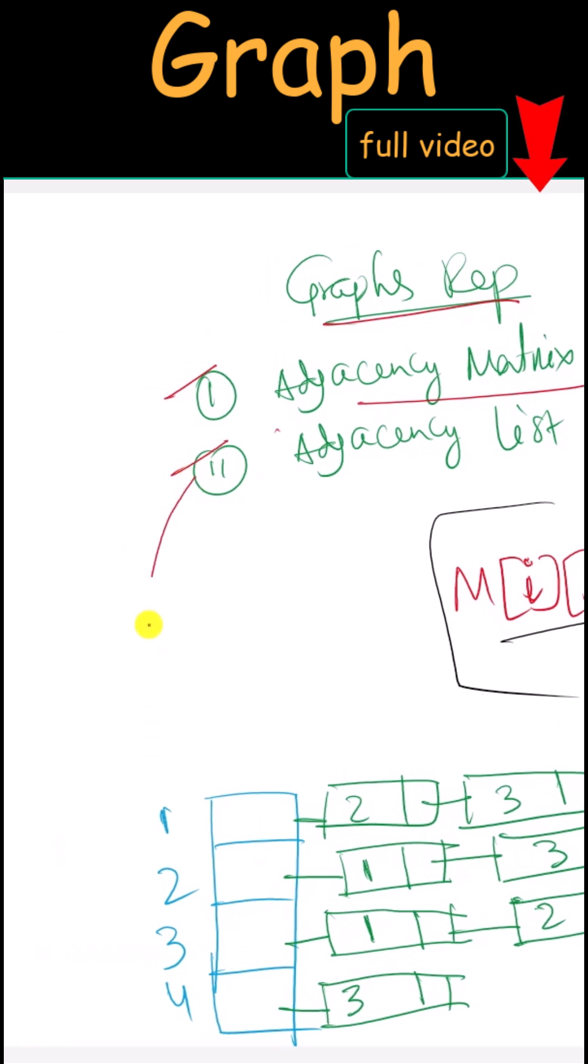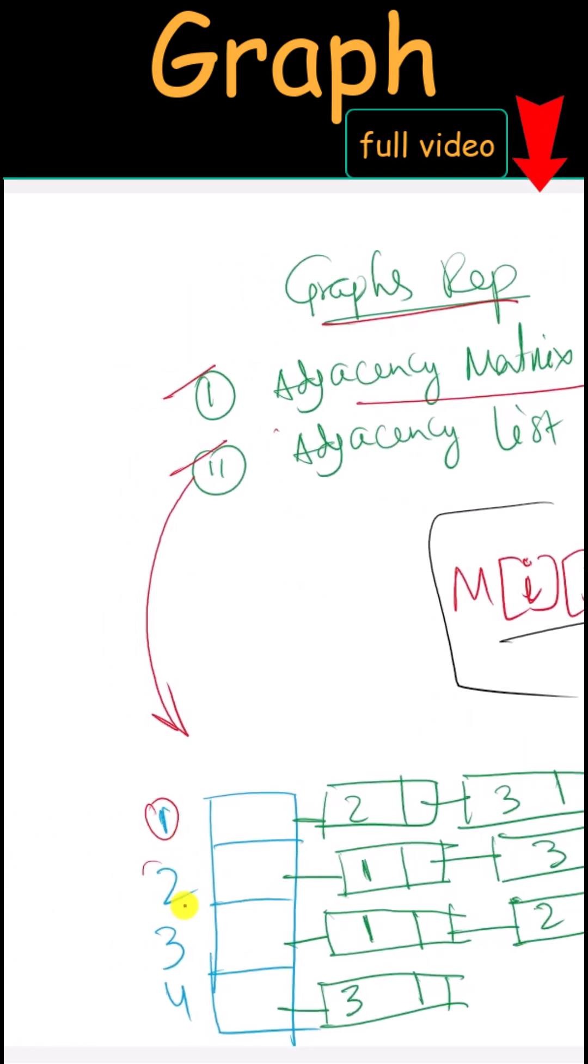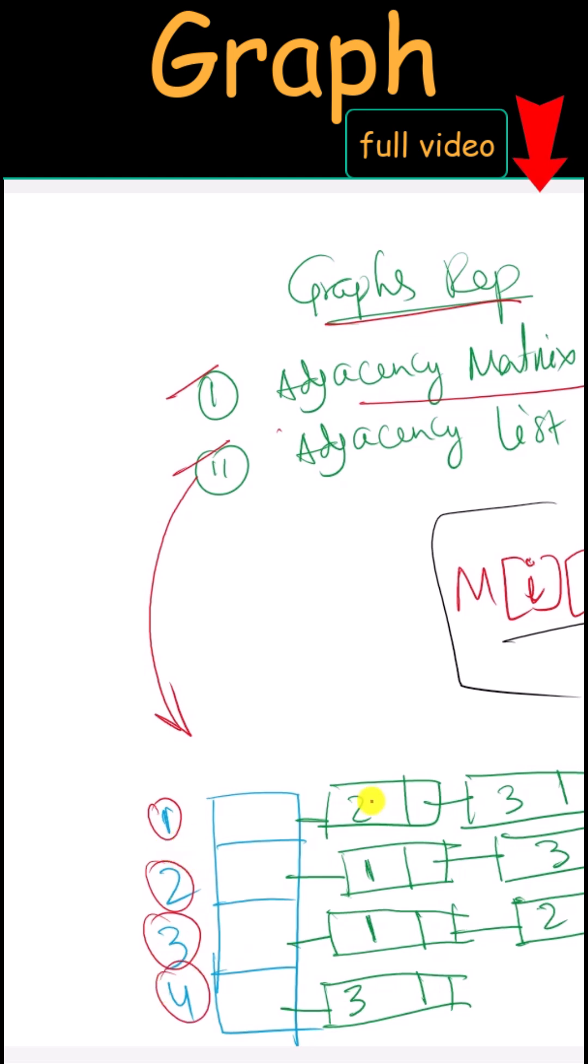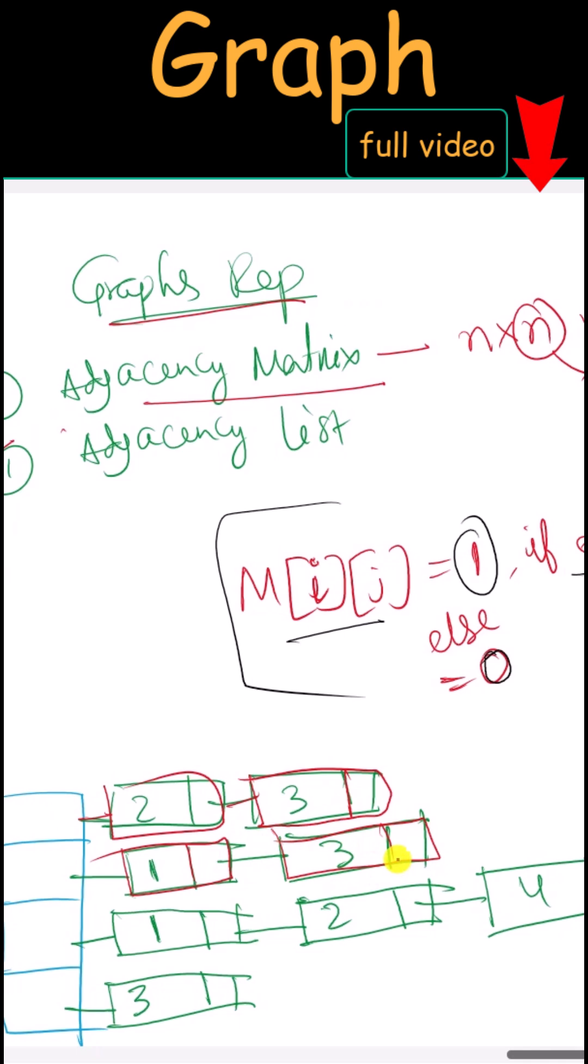We can also use an adjacency list to represent the graph. Here we have 4 vertices. For each vertex, we maintain one linked list which represents the connections between vertices.